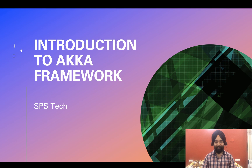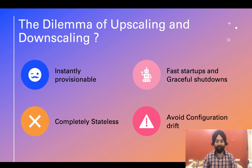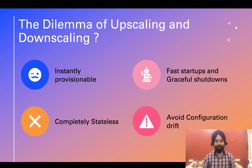Welcome to Introduction to Akka Framework. In the previous video we talked about clouds offering automatic upscaling and downscaling. This is only possible when your infrastructure is instantly provisionable, meaning there are scripts which, once run, configure all your infrastructure. The services deployed on cloud should offer faster startup and graceful shutdowns — the time to start or stop services should be minimal, and while shutting down there should be no loss of state or stuck transactions. The services being upscaled and downscaled should be completely stateless.